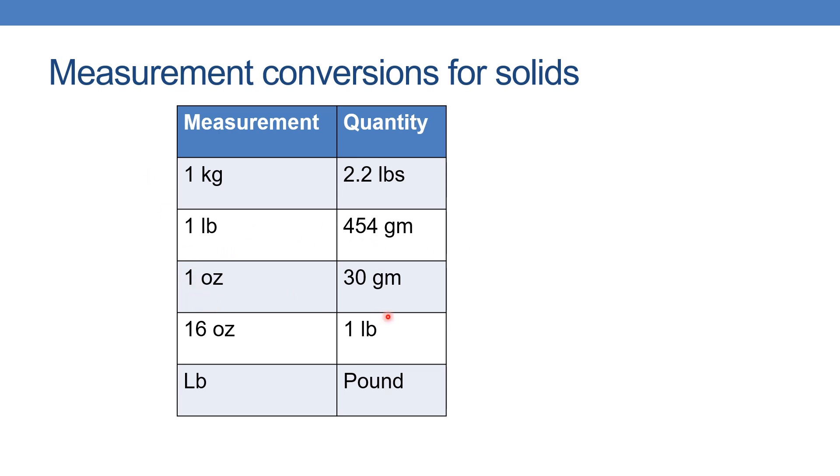1 ounce will be equal to 30 grams, and 16 ounce will be equal to 1 pound. LB means pound.